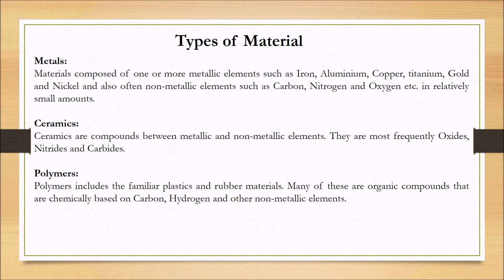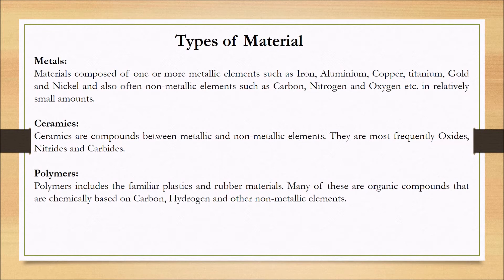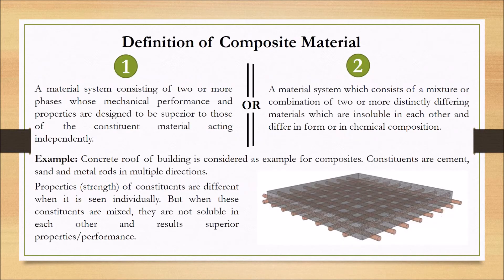Quickly, we will discuss what are the different types of materials — metals, ceramics, and polymers. Metals are composed of one or more metallic elements such as iron, aluminum, copper, etc., and often non-metallic elements such as carbon and nitrogen will be present in small amounts. Ceramics are compounds between metallic and non-metallic elements, most frequently oxides, nitrides, silicon, and so on. Finally, polymers include plastic and rubber materials — many of these are organic compounds chemically based on hydrogen, carbon, and other non-metallic elements.